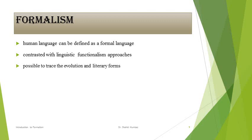By focusing on literary forms and excluding superfluous contexts, the formalists believed it would be possible to trace the evolution of literary forms and perhaps literature itself. Formalism is important because after this theory, other theories came into being, like New Criticism, structuralism, and post-structuralism. Formalism paved the way for the rest of the theories that followed.